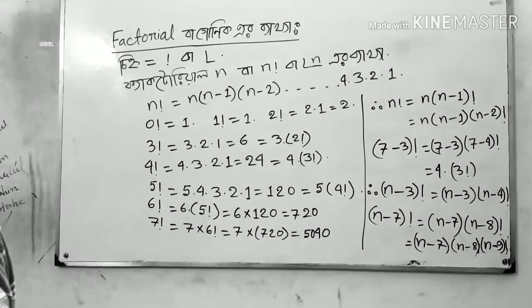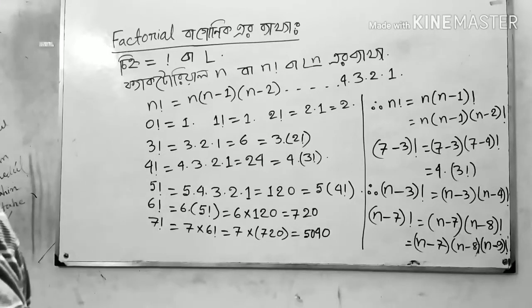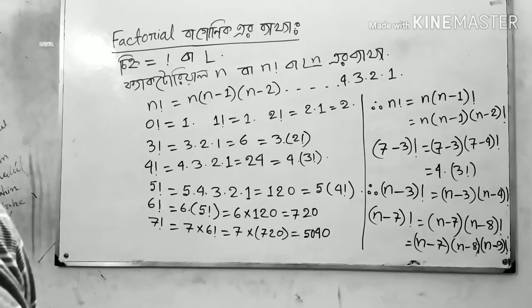This is the factorial factor: n into n minus 1, n minus 2, n minus 3, n minus 4.